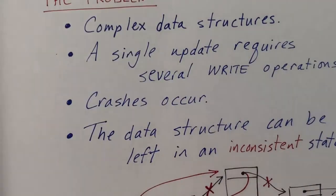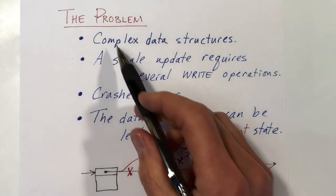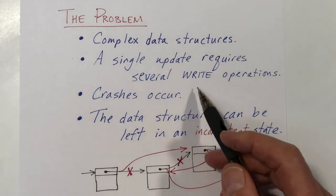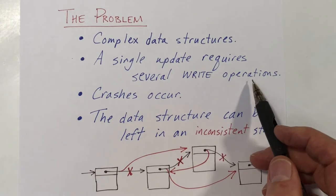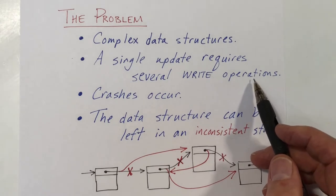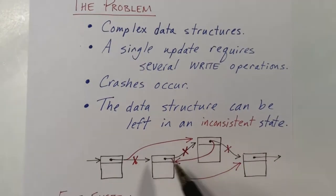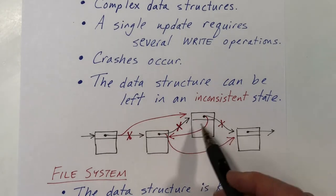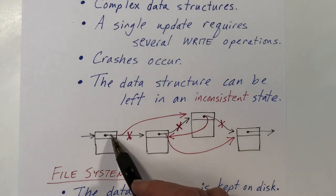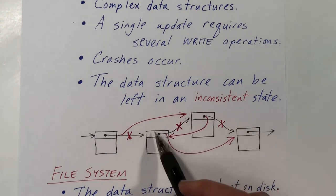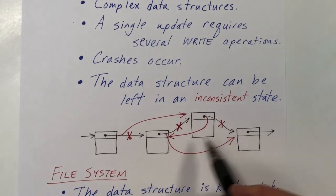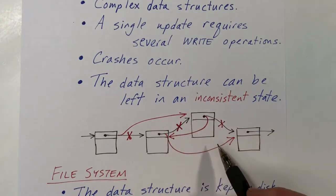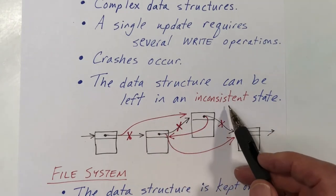This code is pretty complicated so I'm going to start with a motivating example. The problem is that we may have complex data structures and crashes can occur, and updates require several different operations in order to perform the entire update consistently. For example, with a singly linked list, if I'd like to swap the order of two nodes, I need to update one, two, three pointers. So I need three different writes to make the change, and if a crash occurs in the middle of this operation then the data structure can be left in an inconsistent state.